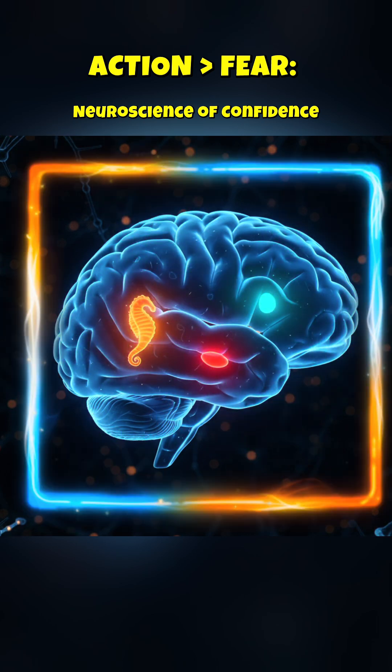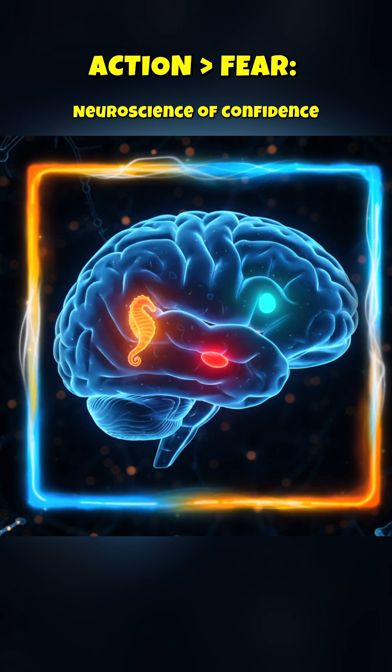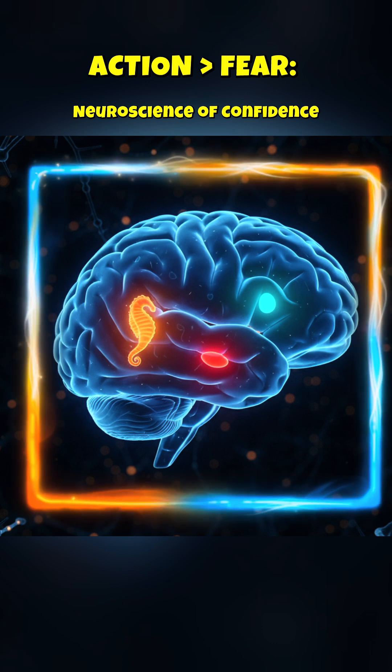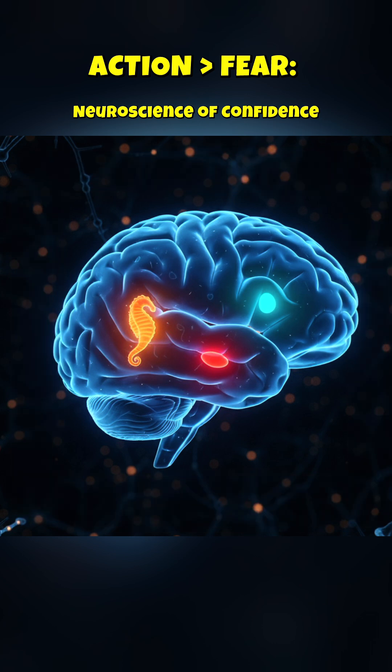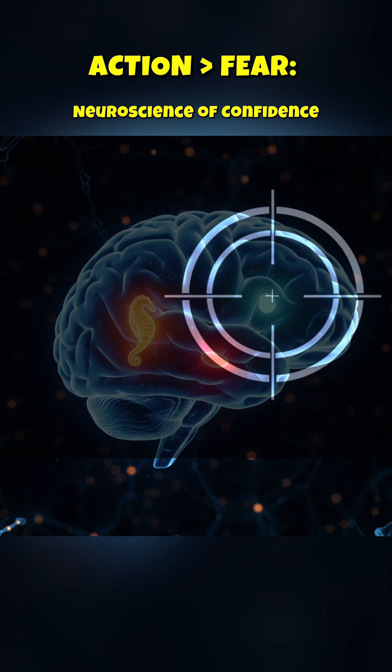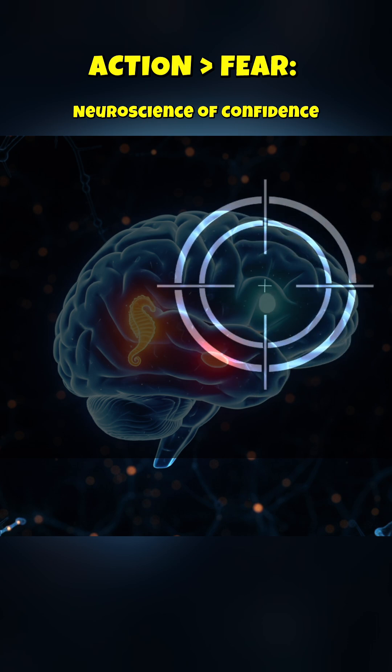True confidence, however, involves a quieter, more efficient network. When you feel genuinely confident, your brain relies less on the emotional, reactive amygdala and more on the prefrontal cortex, the area responsible for rational thought, planning, and self-regulation.